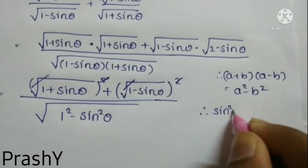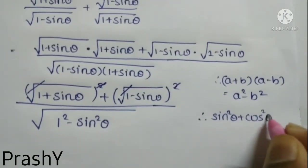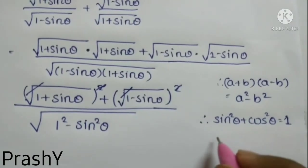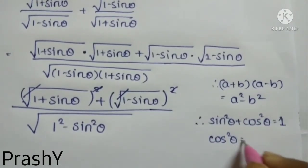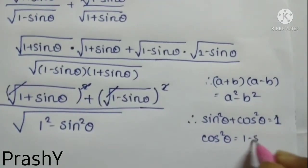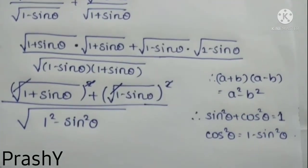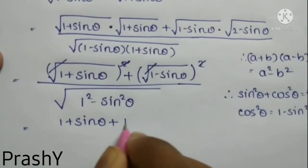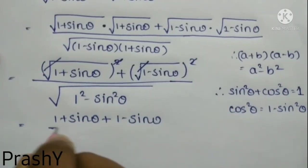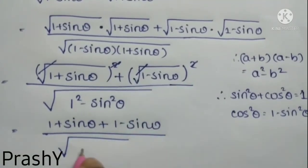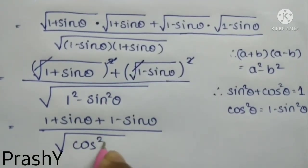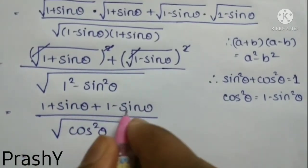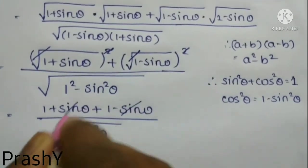We know that sin² θ + cos² θ = 1, so from here we get cos² θ = 1 − sin² θ. Substituting this value, we have (1 + sin θ + 1 − sin θ) in the numerator, by root over cos² θ in the denominator. The +sin θ and −sin θ cancel each other.